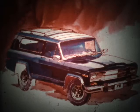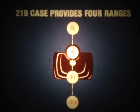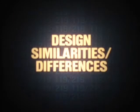But the 219 offers Jeep drivers more ranges. The 219 provides four ranges: four low, neutral, four high, and lock. The driver uses a floor-mounted shifter lever to select the desired range. In a minute, we'll discuss each of these ranges and when they're used. But first, let's look at the design similarities and differences between these two transfer cases.